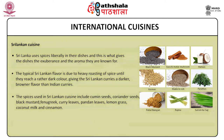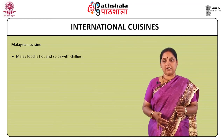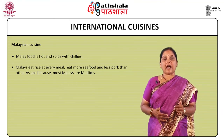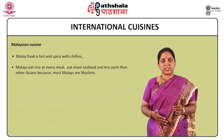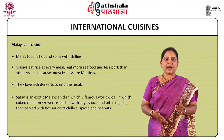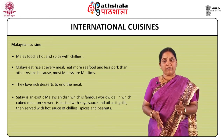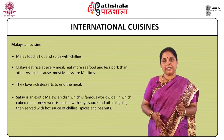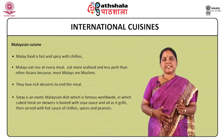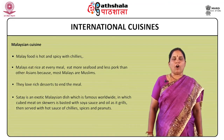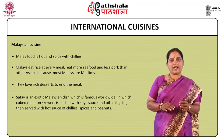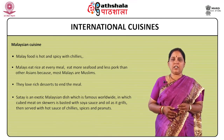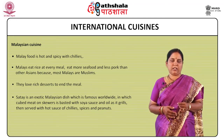Malaysian cuisine: Malay food is hot and spicy with chillies. Malays eat rice at every meal and eat more seafood and less pork than other Asians because most Malays are Muslims. They love rich desserts to end the meal. Satay is an exotic Malaysian dish famous worldwide, in which cubed meat on skewers is basted with soya sauce and oil as it grills, then served with a hot sauce of chilli spices and peanuts. People in Malaysia often have coffee or tea with condensed milk known as teh tarik. Other beverages include malted drinks, plain barley, Chinese tea, green tea, hot soya drinks, fresh juice or fresh milk.